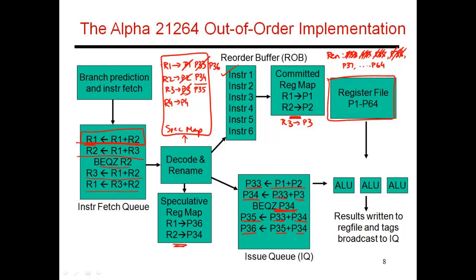The permanent value of R1 used to be in P1, but that has now been changed to P33. At this point, I'm never going to look at the value in P1 — if I ever need the value in R1, I will look at P33. So this register P1 has no use anymore and can now be released back into the free pool or rename pool. P1 joins that list.